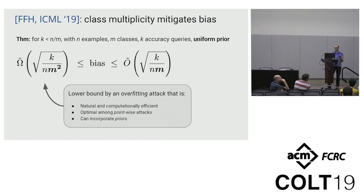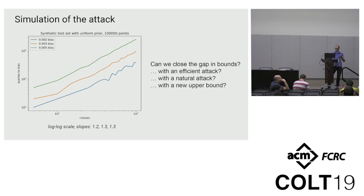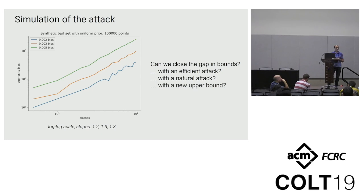The open problem is basically closing this gap — there is a gap between M and M² in the denominator. Another way to think about it: if we want to achieve a fixed level of bias, how much should the number of queries grow as the number of classes grows? The question is whether this growth is linear or quadratic. We plotted it for our attack on a log-log scale to see the power of the relationship, and in our example the growth is roughly between 1.2 and 1.3 — so it's worse than linear but not quite quadratic. We believe it's likely quadratic for this attack, but there might be better attacks. So it would be nice to either find such better attacks, or improve our upper bound on the achievable bias. That's it — let me know if you have any questions.